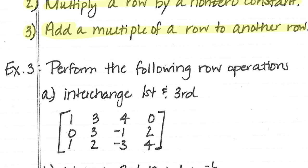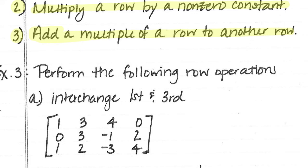So the first question on number 3, it says perform the following row operations. They want us to switch the first and the third row. So all I'm going to do is I'm going to take this third row and write it as the first row. 1, 2, negative 3, and 4.